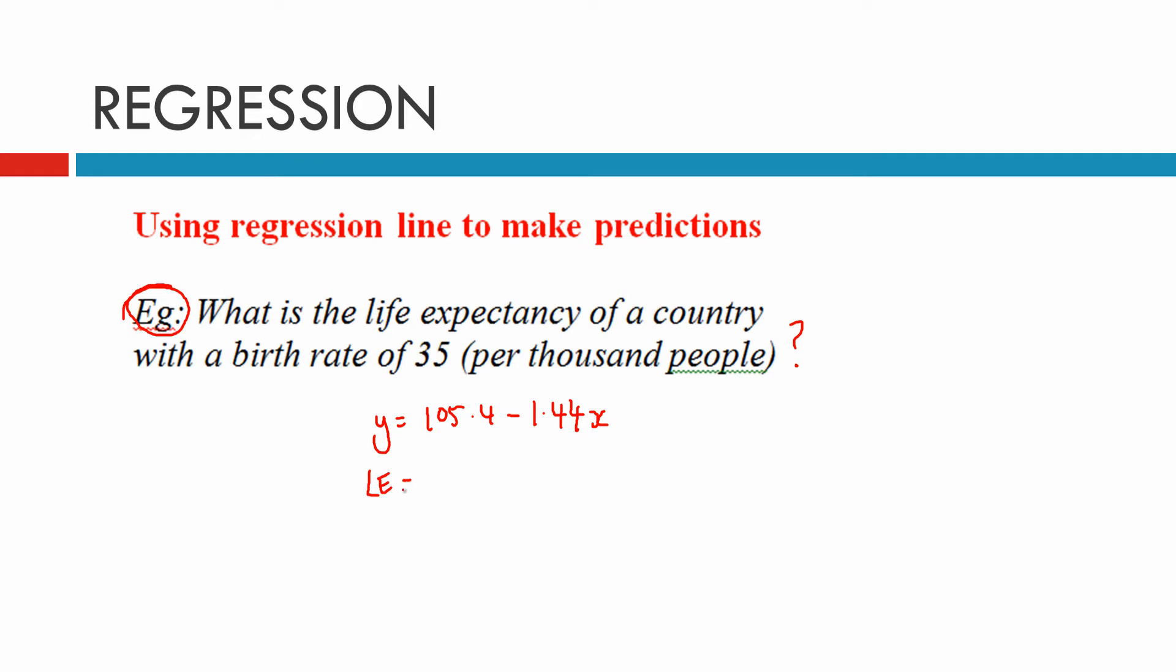Life expectancy equals 105.4 minus 1.44, and the x value is 35. We don't have to write the 1,000, it's 35. We just make sure that we've always seen thousands of people. When we work that out, we get 55 years. Life expectancy is in years, so 55 years.